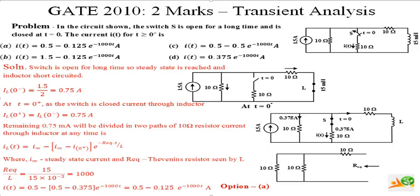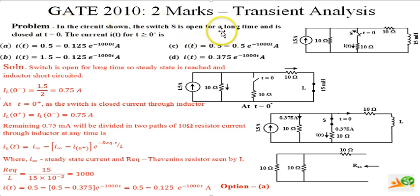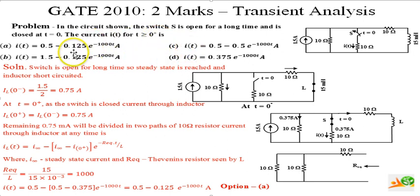The present GATE problem is the fourth problem in this set on transient analysis. It is from GATE 2010 and carries two marks. In the circuit shown, the switch S is open for a long time and is closed at t equals zero. The current i(t) for t greater than zero plus is given by one of four options A, B, C, or D, and we have to find the right option.